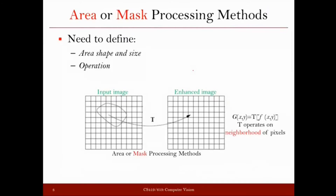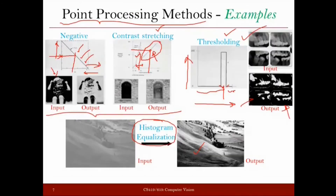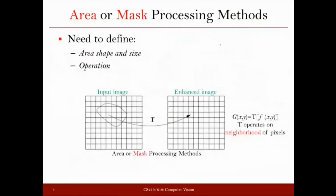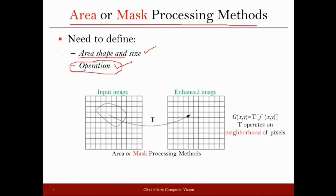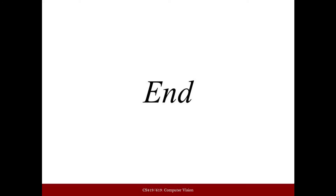In case of area or mask based processing, we need to know two things. One is what is the size of the area — how much neighborhood area we are going to consider around the pixel. And another is the operation we are going to perform with respect to the pixels we are considering from the neighborhood. So there are two things we need to define for area or mask based processing — not only the operation but also what kind of area we are going to consider around the pixel.